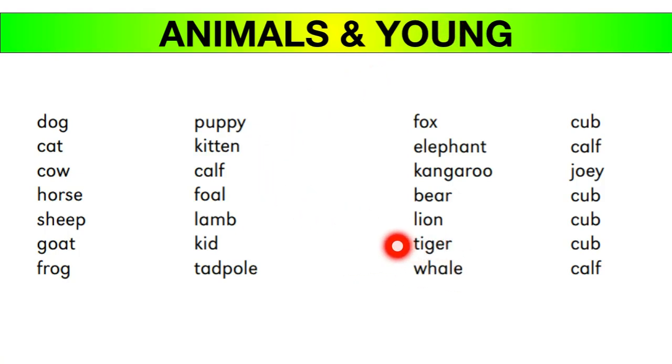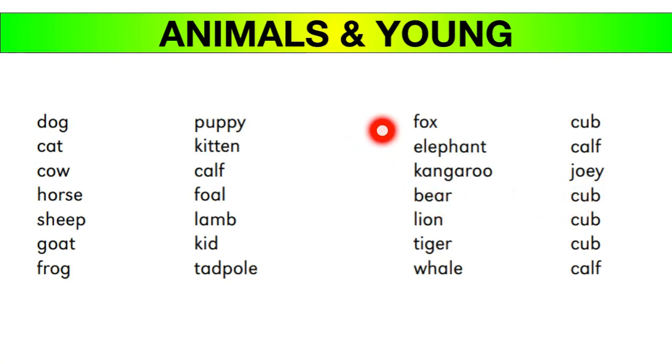Similarly, a tiger's young one, a bear's young one, and a fox's young one are all called a cub. So 'cub' is a common noun for the young ones of several wild animals.